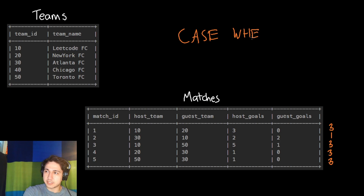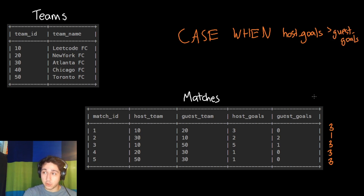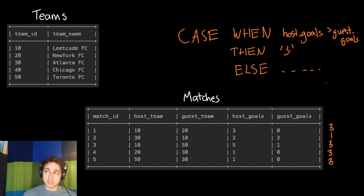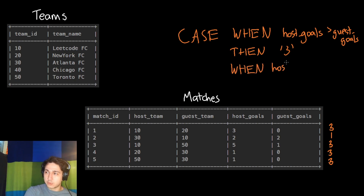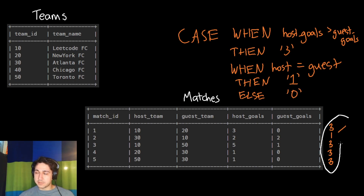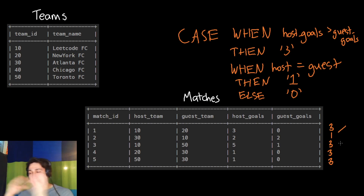A CASE works by giving it a condition: WHEN host goals is greater than guest goals, THEN return three — giving the host team three points because they won. If that condition is not met, we check WHEN host goals equals guest goals, THEN give them one point. Otherwise, if it's a loss, give them zero points. So first we create these columns using CASE to get how many points each team got, then we combine all the points into one big list where we can sum.